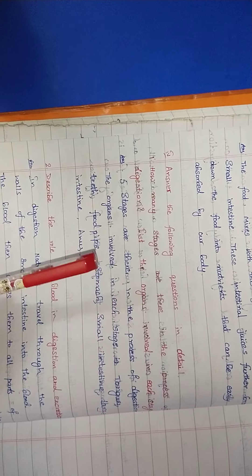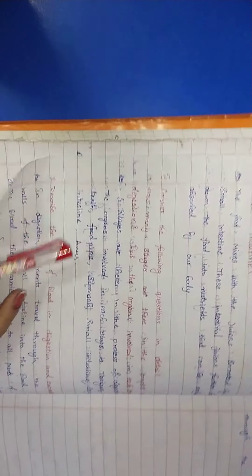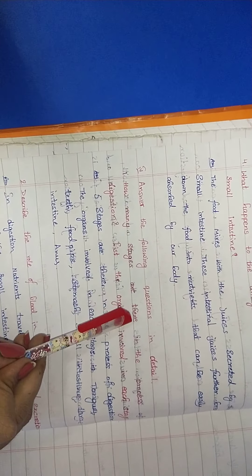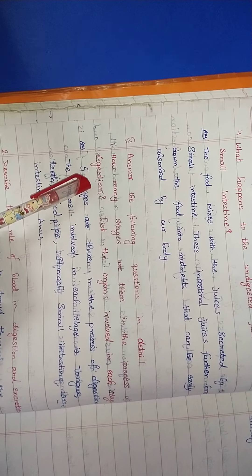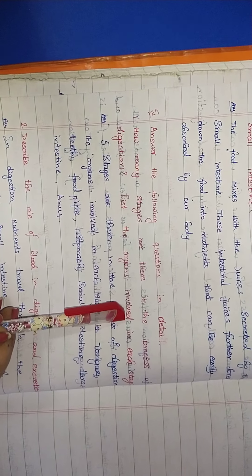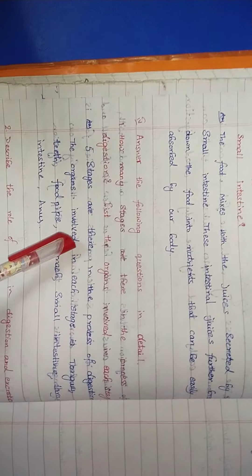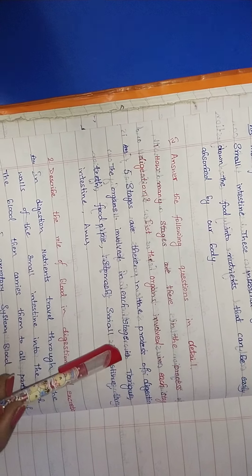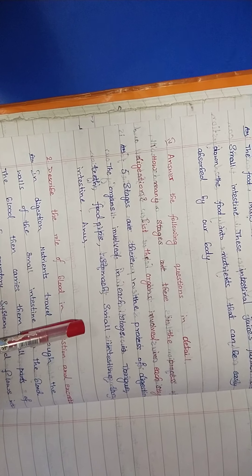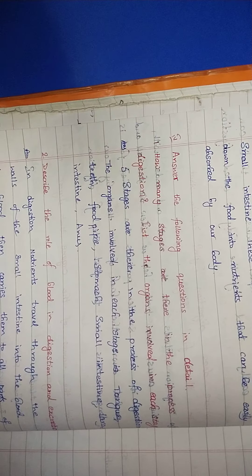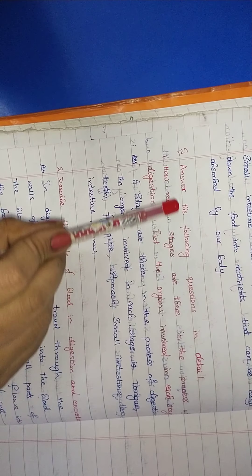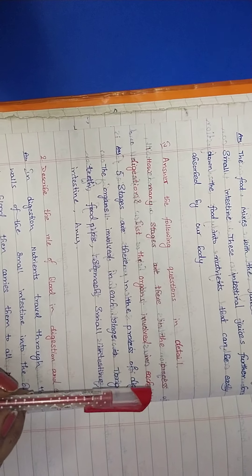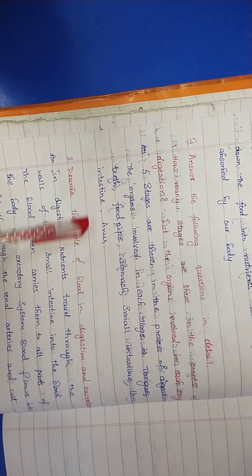In the studio we are having two Roman sections: third Roman and fourth Roman questions and answers. Now see fourth Roman — two questions we have. First one: How many stages are there in the process of digestion? List the organs involved in each stage. Five stages are there in the process of digestion. The organs involved in each stage are: tongue, teeth, food pipe, stomach, small intestine, large intestine, and anus. Here they are asking only stages and organ names.